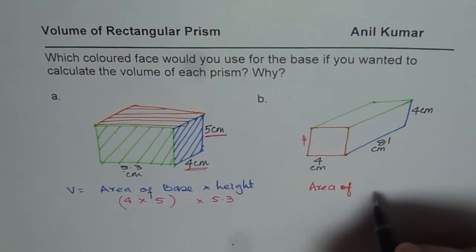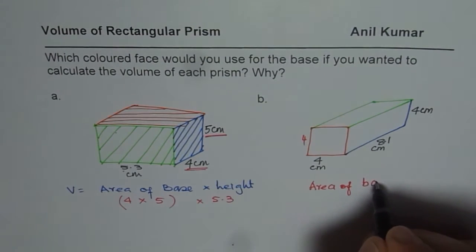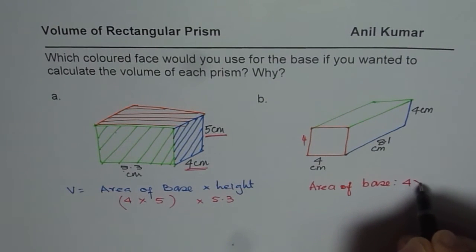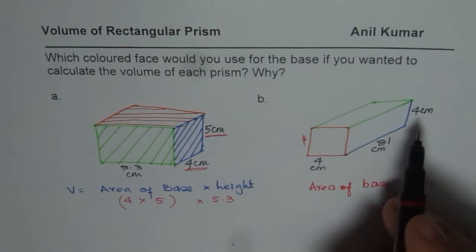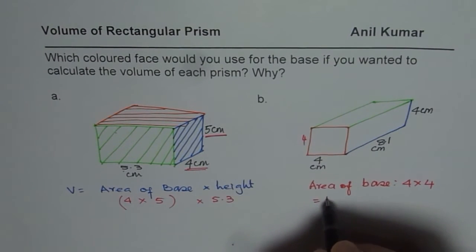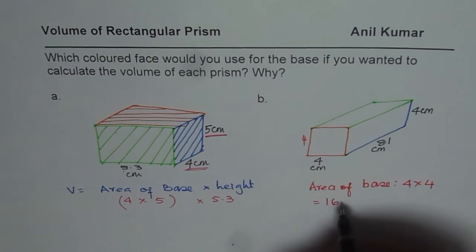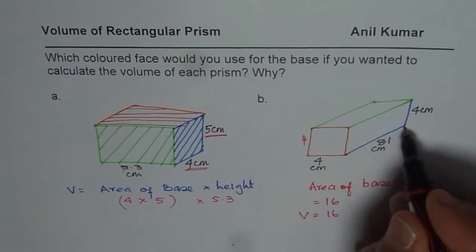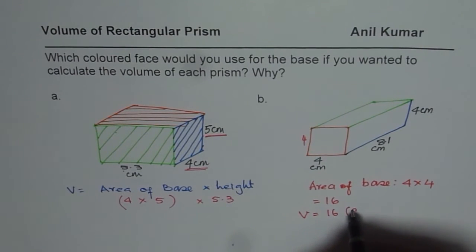So 4 times 4 could be a good option. So area of base in this case would be 4 times 4, since they are whole numbers. And once we calculate this which equals to 16, we could multiply 16 by height. I mean in this case the length, 8.1 to get the volume.